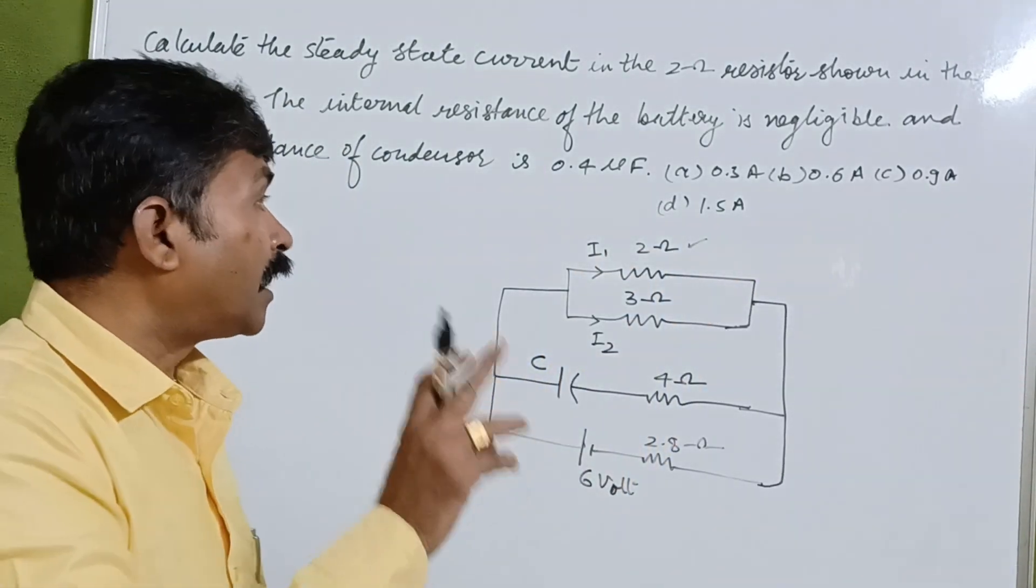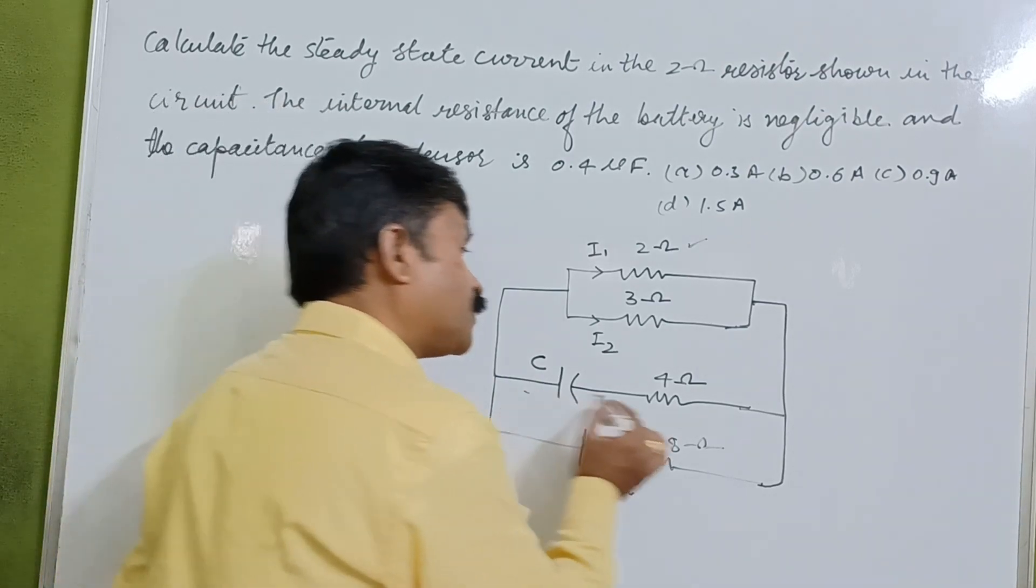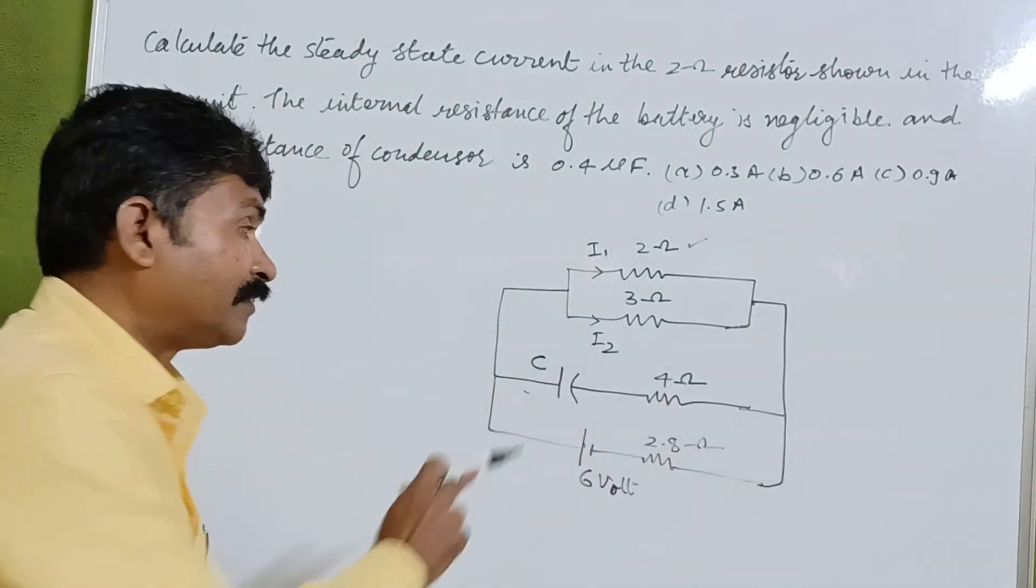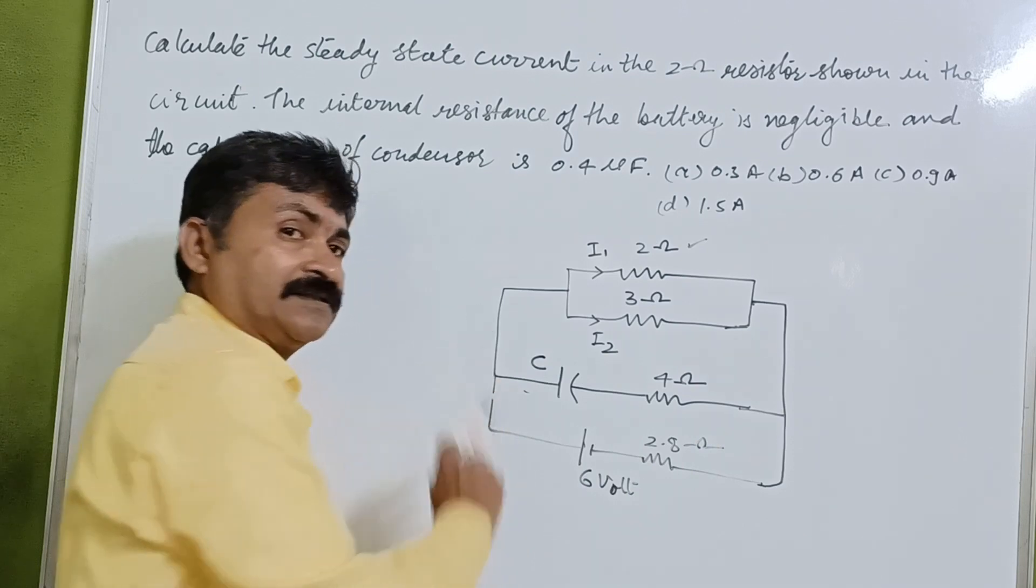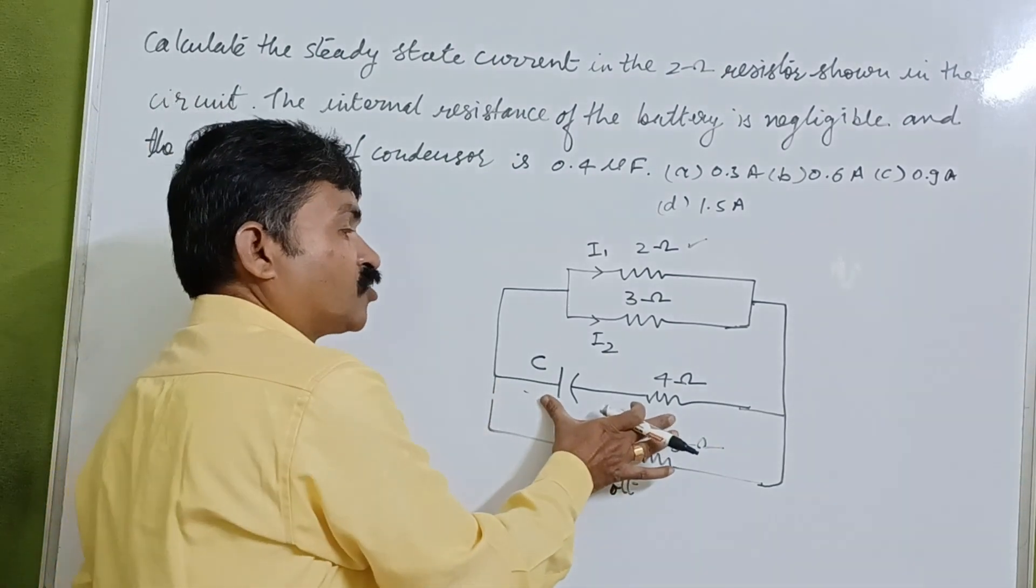Now under steady state condition there will be no current flow in this branch, so this branch will be neglected.